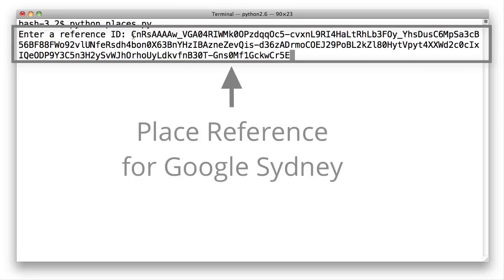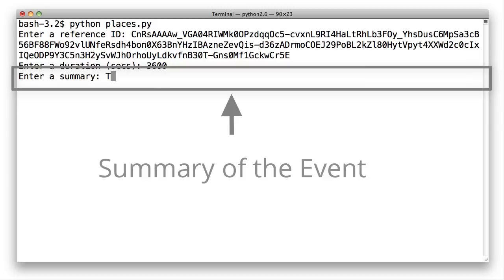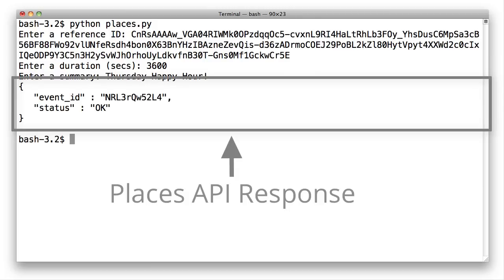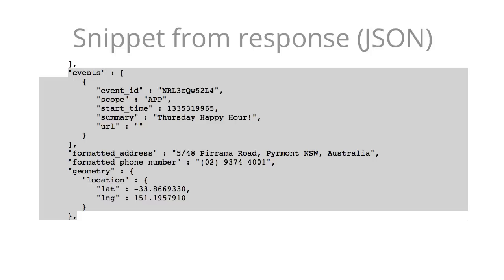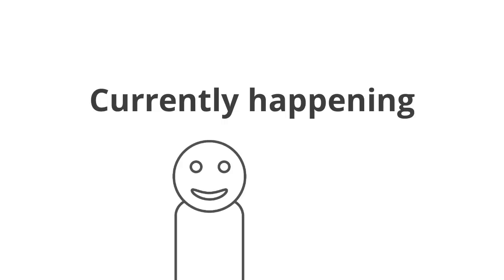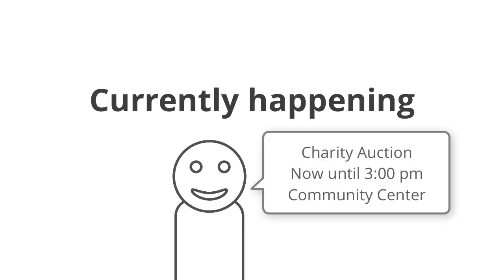Here's an example of a request for Google's office in Sydney. I'm going to submit a new event — I'm going to add a happy hour for Thursday afternoon here in the Sydney office. The idea is that you can use this feature to provide your users with information about events that are currently happening, across one of the millions of locations available in the Places API. And once they find an event, users can check in at a specific place, or they can check into a specific event.